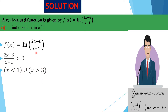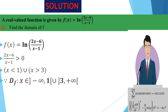There is one more consideration: since we have a rational function inside the log, the denominator x - 1 must never be zero. However, the solution set already excludes x = 1, since it requires x strictly less than 1. So the domain of f is x ∈ (-∞, 1) ∪ (3, +∞).